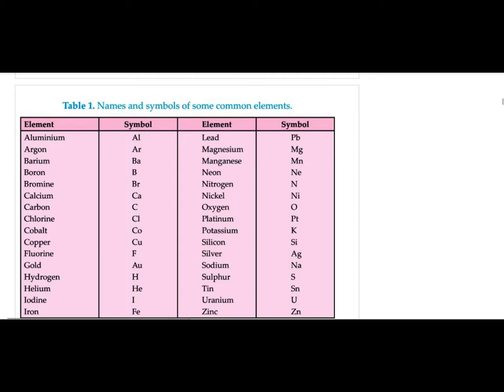There are also chemical formulae of certain important compounds with their chemical name and common name. For example, calcium oxide is also known as quick lime — quick lime is the common name. It has nothing to do with the lime fruit. Calcium hydroxide is slaked lime. You should remember these names; that list has all of them.